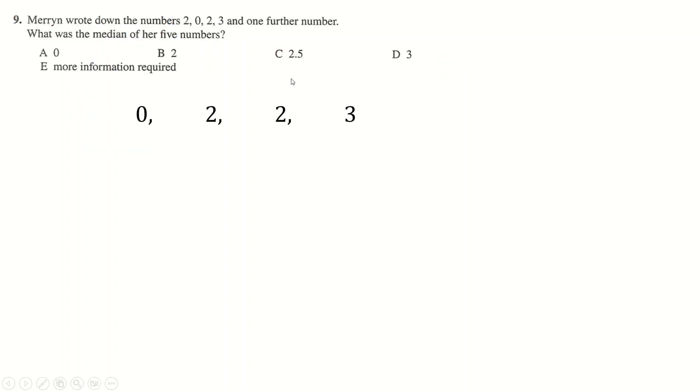Question number 9. Here are the four numbers in order, from smallest to largest, which you need to do for the median. If you have a fifth number, it could go down here if it's less than 0, and then the median is 2. Or it could go here if it's between 0 and 1, and then the median is 2. Or it could go here if it's between 2 and 2, but the only number between 2 and 2 is 2, and the median ends up being 2. So the median is always 2.